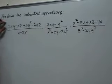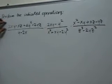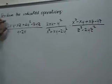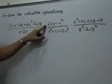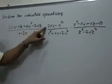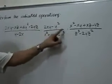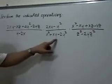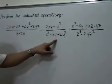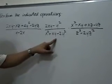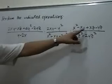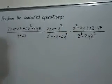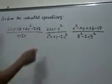For this numerator, we will probably resort to factoring by grouping. And this numerator and also this denominator will probably take out a common factor. This is a factorable trinomial, and we will probably use factoring by grouping in that last numerator.